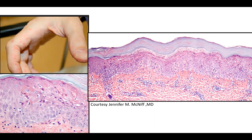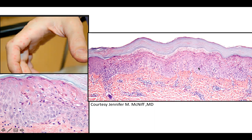Biopsy of one of his fingers shows perikeratosis and superficial necrosis of the upper epidermis, as well as exocytosis of small lymphocytes and focal vacuolar change.